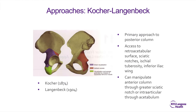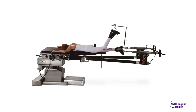The Kocher-Langenbeck — named after two German surgeons, Kocher born 1874 and Langenbeck 1904 — is the primary approach to the posterior column. It gives you access to the retroacetabular surface, the sciatic notches, the ischial tuberosity, and the inferior iliac wing, and allows manipulation of the anterior column through the greater sciatic notch or interarticulary through the acetabulum. The patient is positioned prone with the knee flexed at all times to release tension on the sciatic nerve, because retractor placement during this approach creates significant tension on the nerve and can easily cause sciatic nerve palsy.